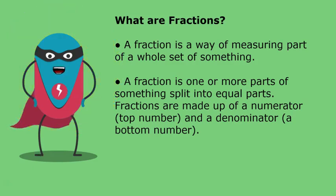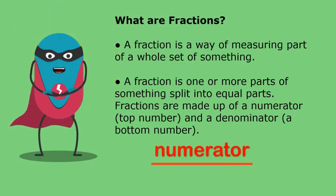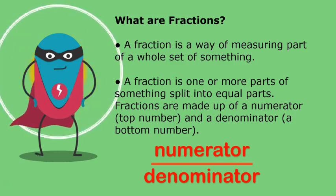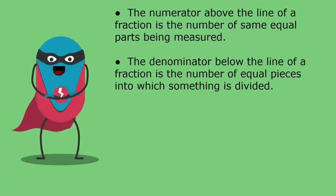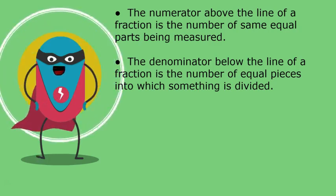Fractions are made up of a numerator, the top number, and a denominator, the bottom number. The numerator above the line of a fraction is the number of same equal parts being measured. The denominator below the line of a fraction is the number of equal parts into which something is divided.